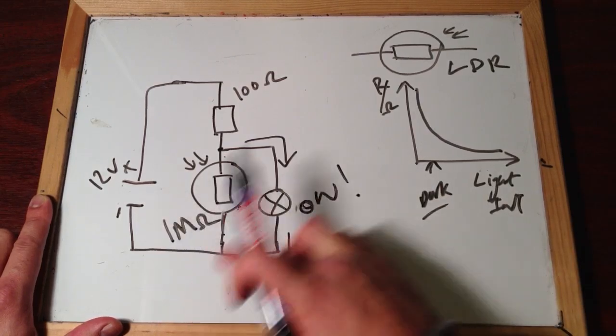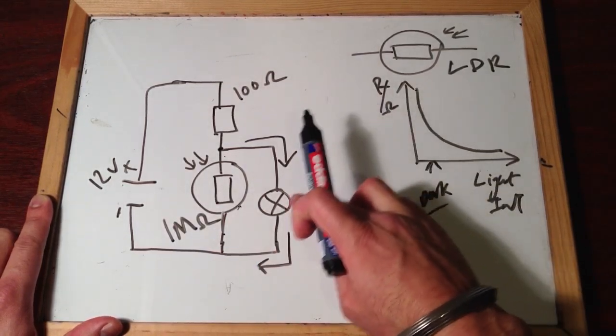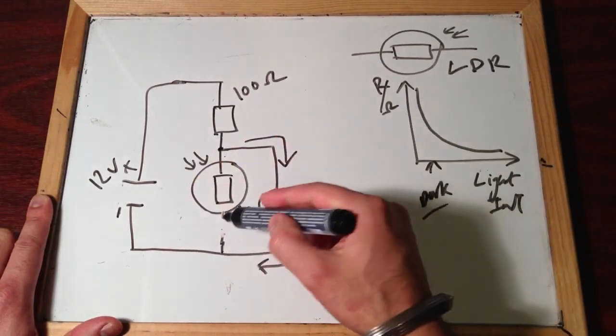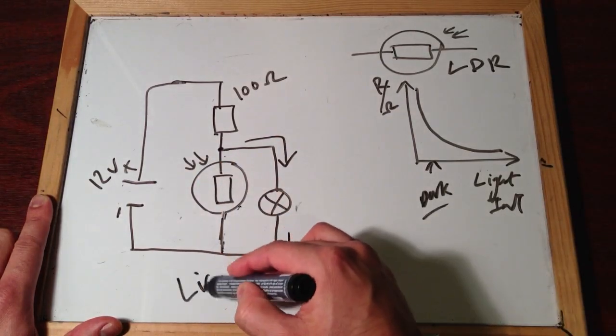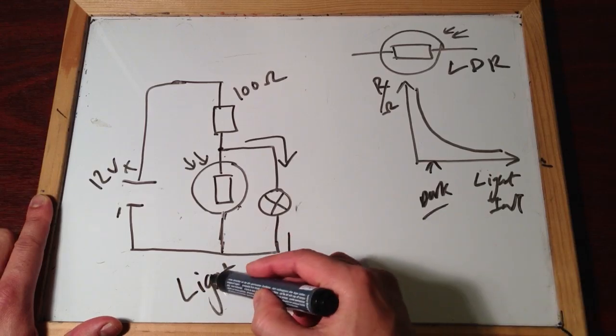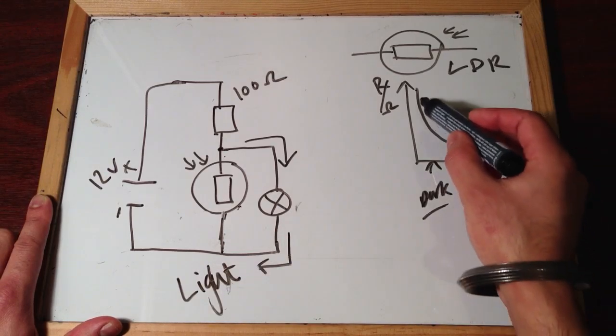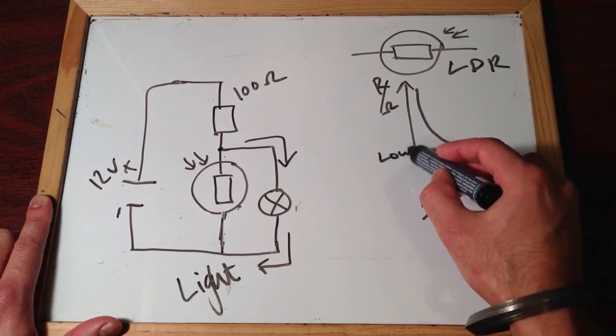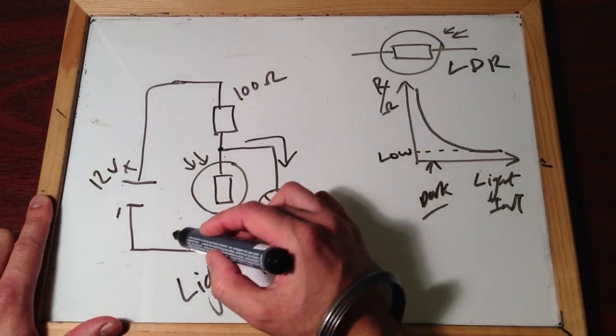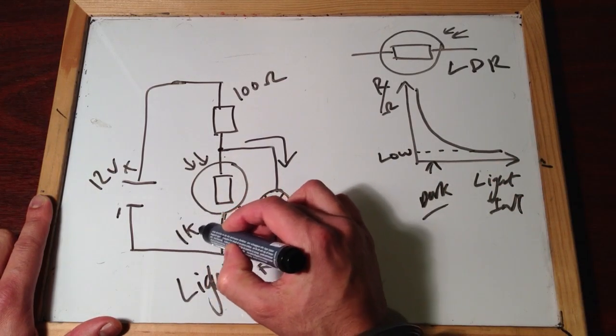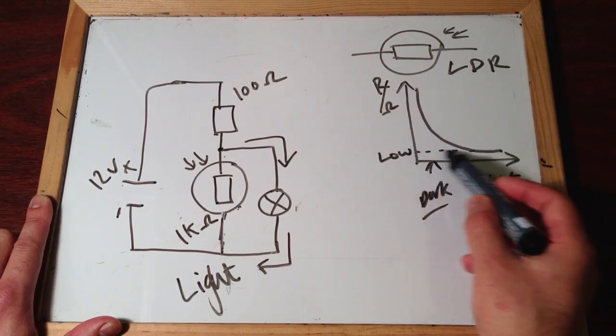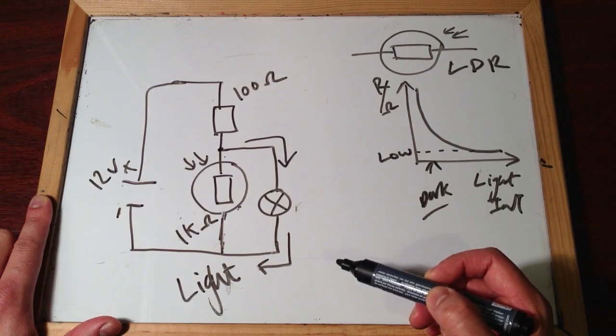Now, when it's light, however, so we just get rid of these, and that, and say this is in the light. Now, if you look here, as light intensity increases, we'd expect the resistance to be really low. So, let's just say this is now 1 kilo ohm. So, instead of being millions of ohms, it's now just 1,000 ohms.